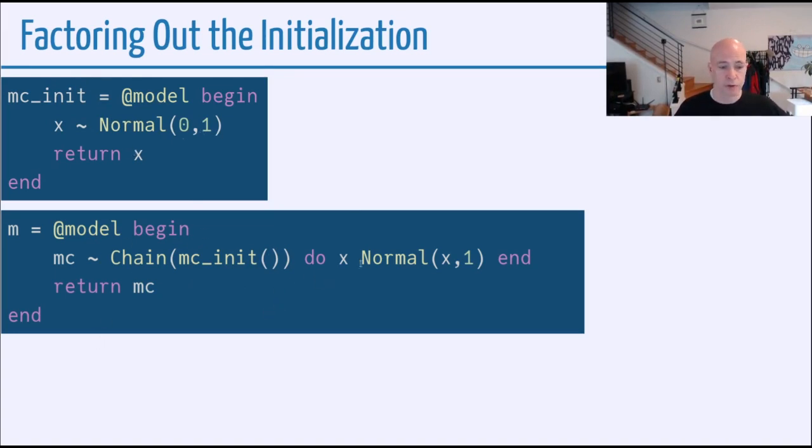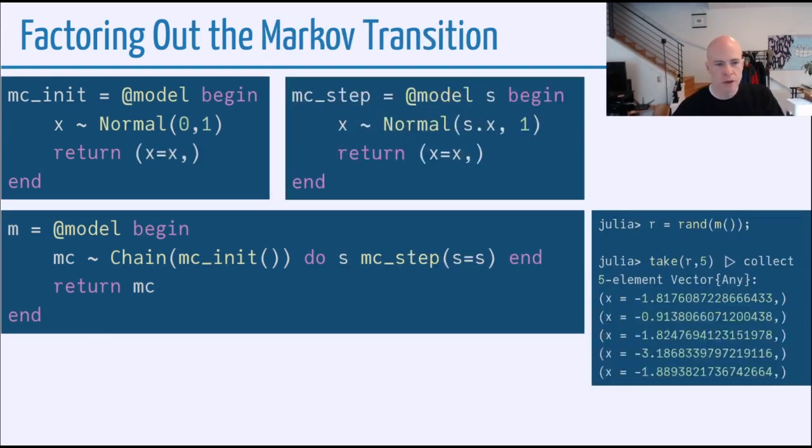We can also do this with the step. So instead of saying x goes to Normal(x,1), we could take this a step further and also factor out the Markov transition. So here we have mc_step is a model that takes a state. And in the body of the transition, we look at the x value at that state, call that a new x, and then return x equals x.